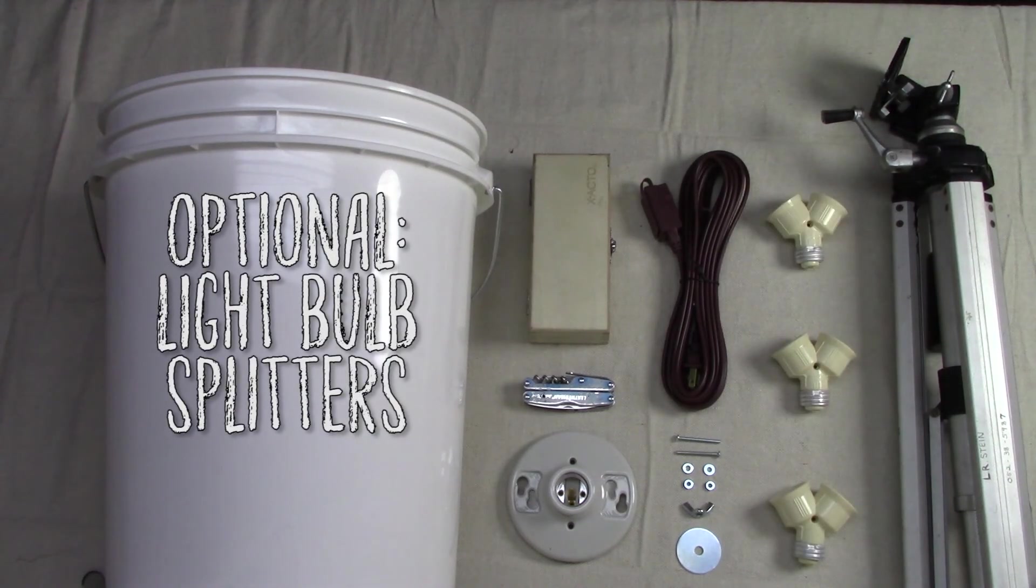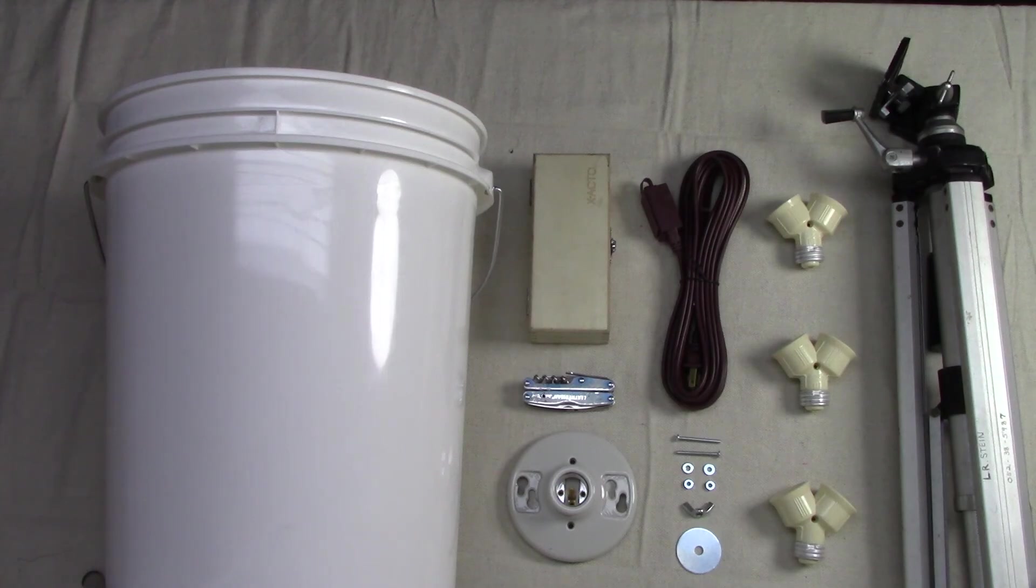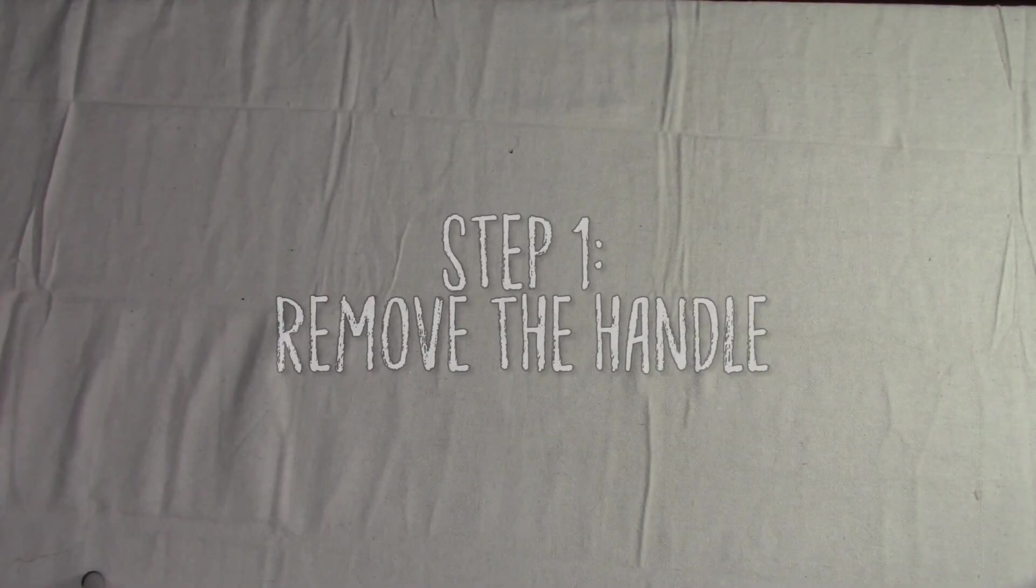These next parts are optional depending on the wattage you want your softbox to produce. You can just screw in a single 100 watt bulb, and your softbox is ready to go. However, if you add one splitter and an additional bulb, you have doubled your light output. Beyond that, you can place another splitter into each of the openings on the first splitter with a bulb for each and you have a 400 watt fixture. With that said, you will also need enough 100 watt bulbs to fill the sockets you are using.